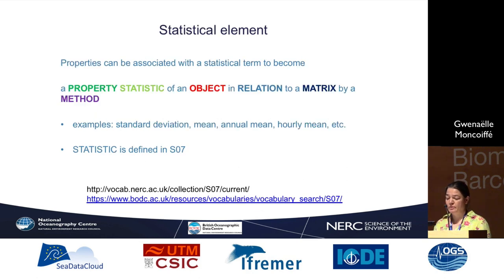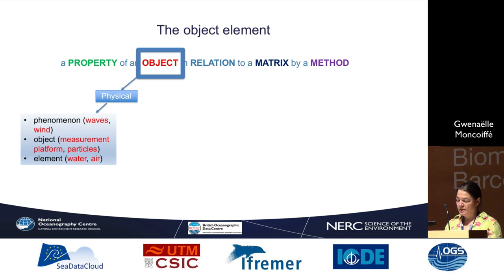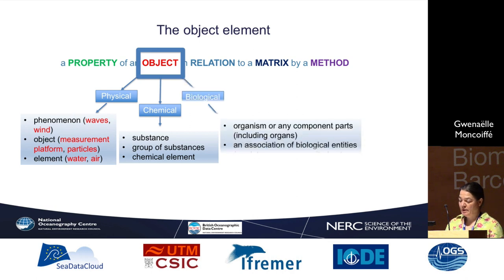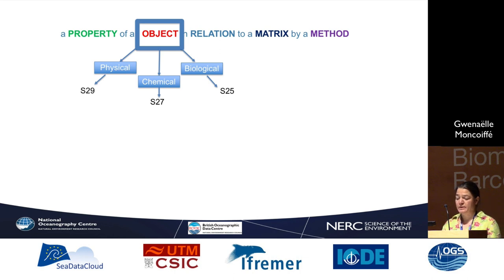The properties can be associated with a statistical term to become a property statistic of an object in relation to a matrix by a method. So you could have, for example, a concentration standard deviation, mean, annual mean, or hourly mean. All those terms are defined in vocabulary S07. The object element: an object can be a physical entity, a phenomenon like waves or wind, measurement platform, particles, water, or air. It can be a chemical substance, a group of substances, or a chemical element. It can be a biological organism or any parts including organs. Physical entities are defined in S29, chemical in S27, and biological in S25.